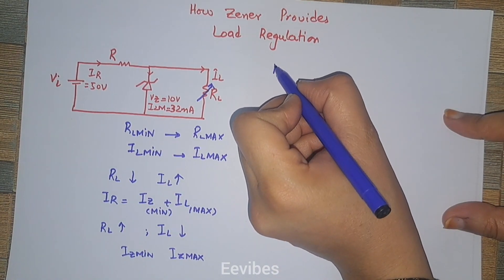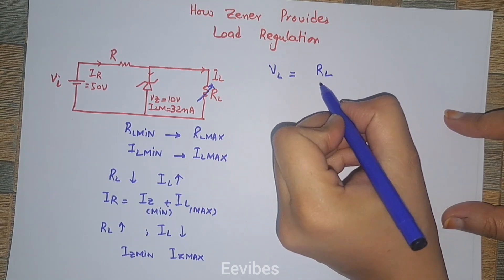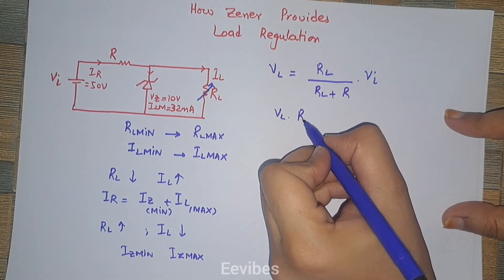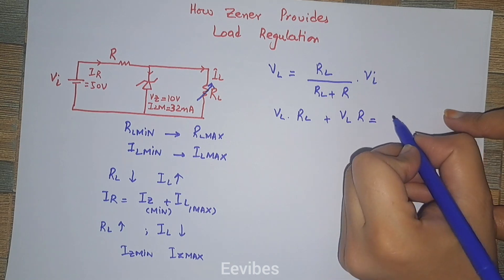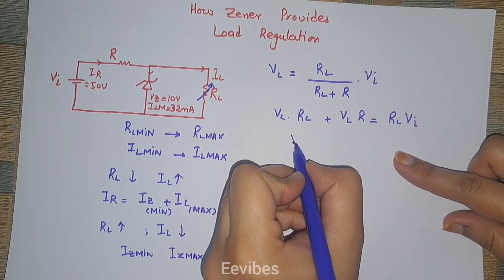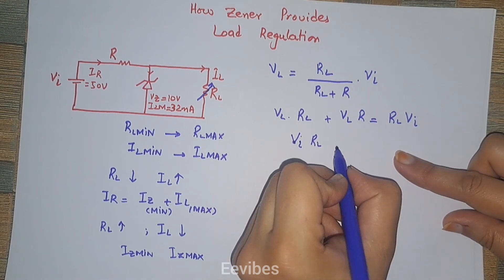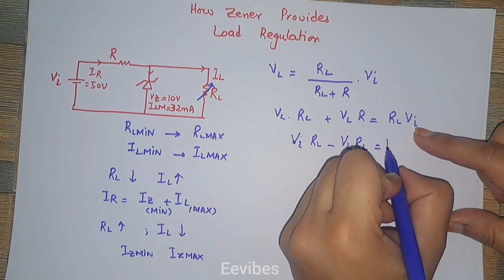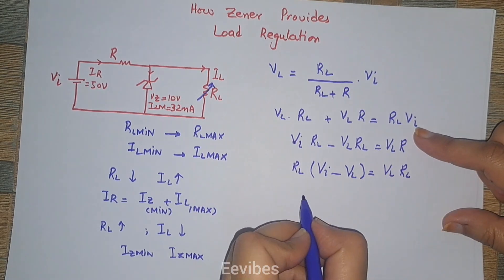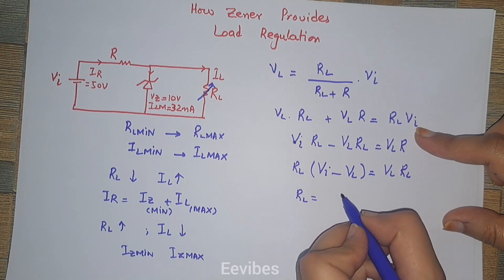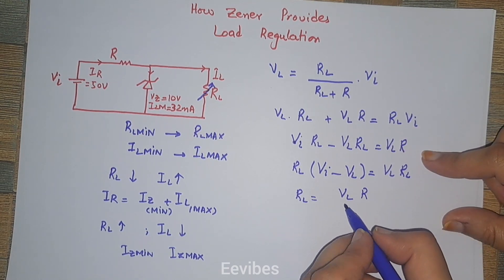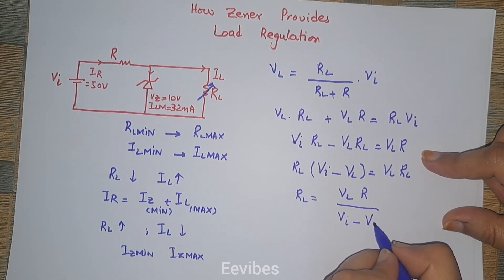To determine RL_minimum, we apply the voltage division rule: V_load = (RL / (RL + R)) × V_input. Simplifying this expression: V_L × (RL + R) = RL × V_i, which gives V_L × R = RL × (V_i − V_L). Taking RL common, the load resistance formula becomes RL = (V_L × R) / (V_i − V_L).